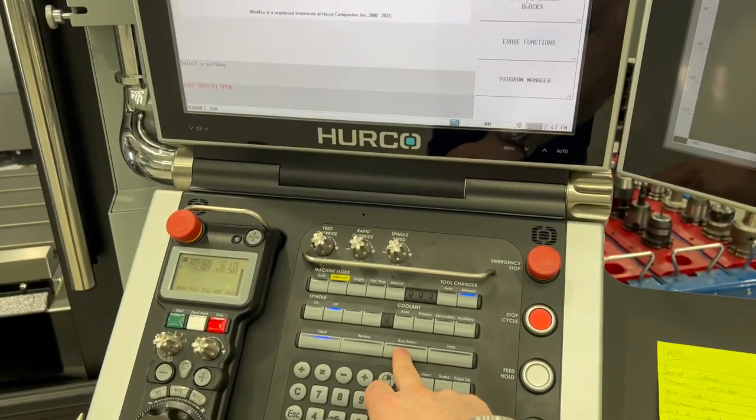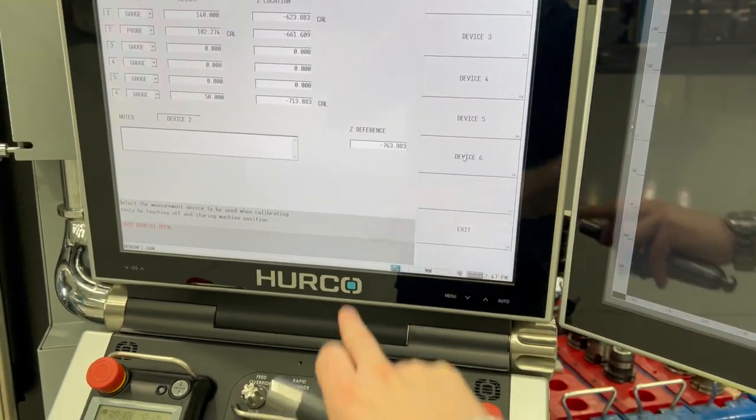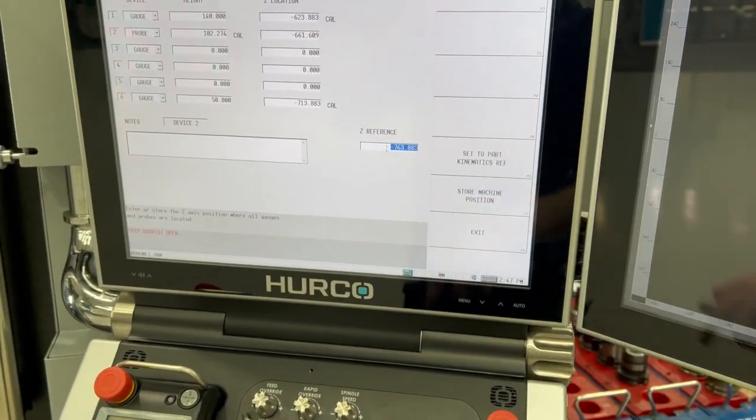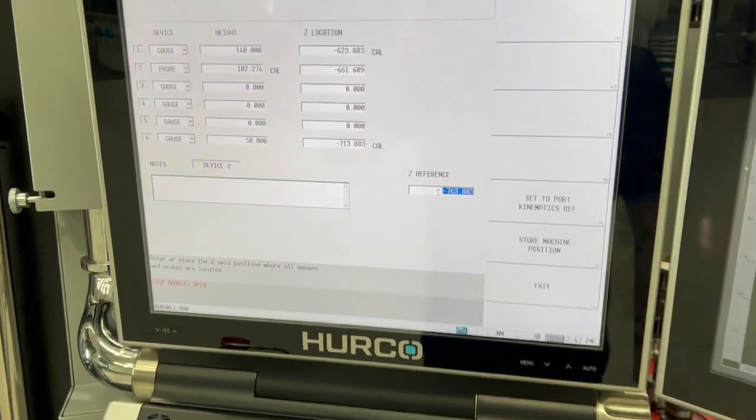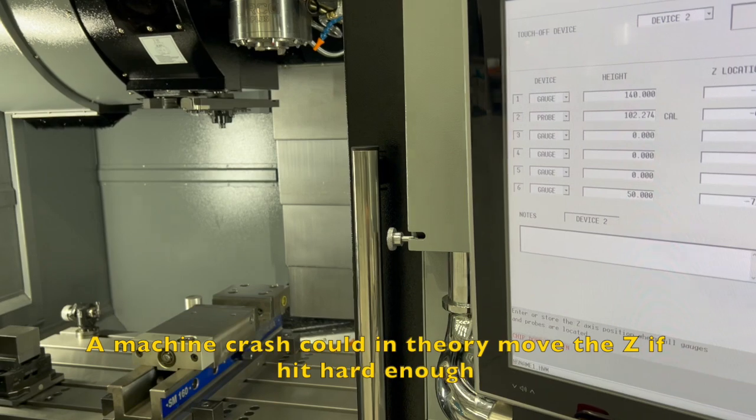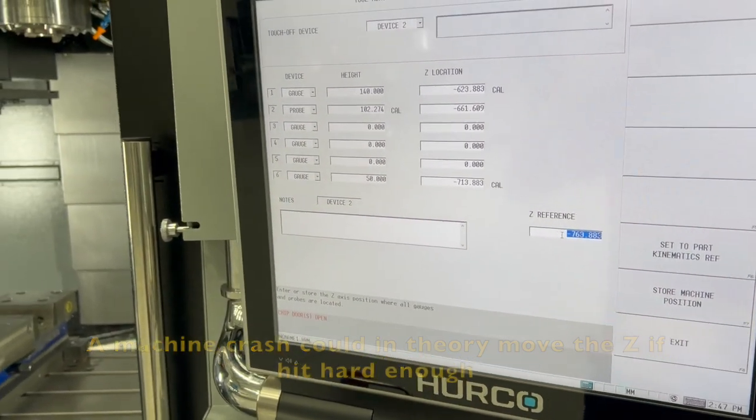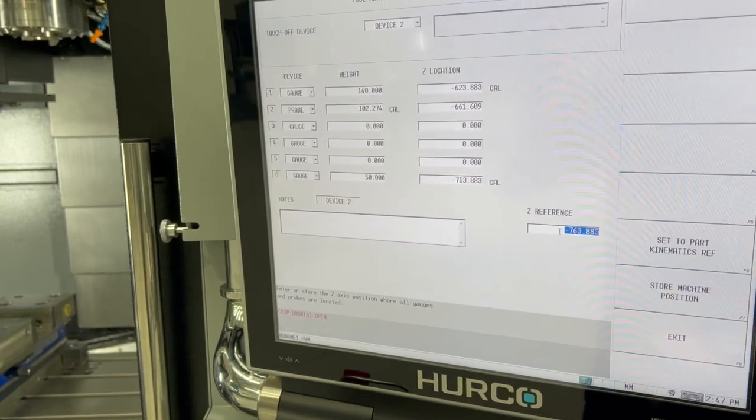So that is this figure here. If we go into the tool setup page, more, and tool measurement screens, that's this Z reference figure here. So maybe you've accidentally deleted this or you've had a bit of a knock on the machine and you think this could have changed, or maybe you've let the apprentice on here and he's accidentally deleted it.